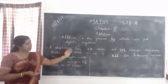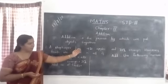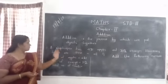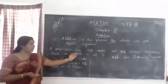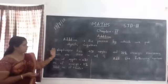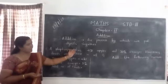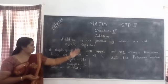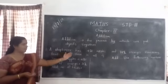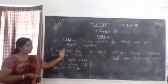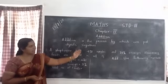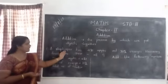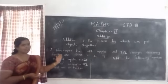A shopkeeper has 421 apples and 312 oranges. How many fruits are there in all? The shopkeeper has 421 apples and 312 oranges. How many fruits are there in all?